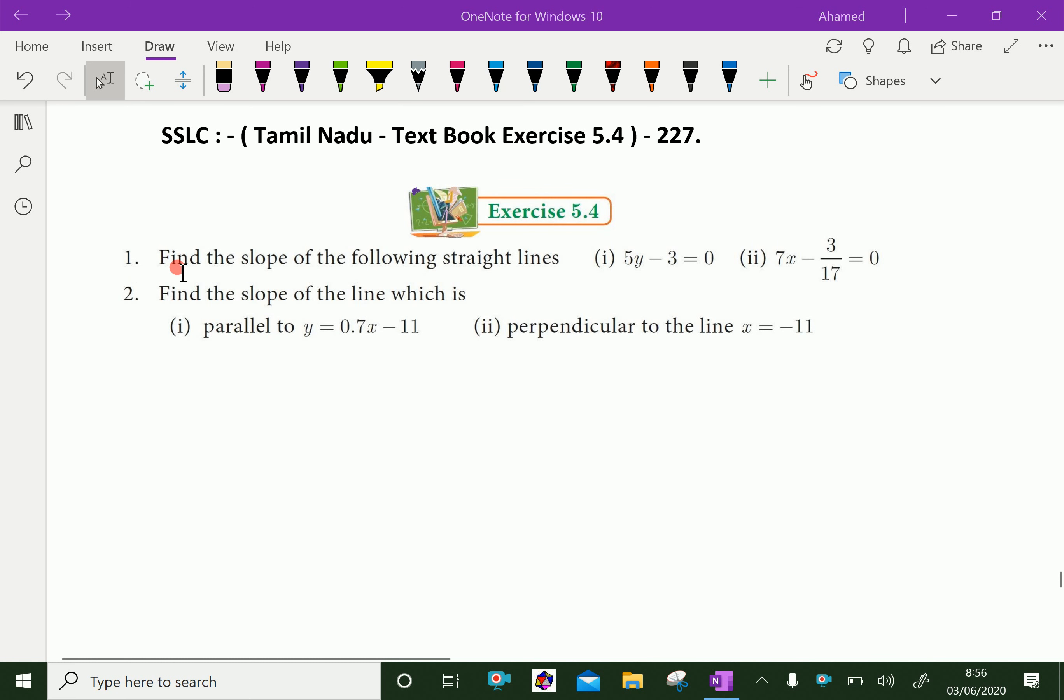Welcome to aminacademy.com. Let us do Tamil Nadu SSLC Maths Textbook Exercise 5.4, Question number 1. Find the slope of the following straight lines: (i) 5y - 3 = 0 and (ii) 7x - 3/17 = 0.